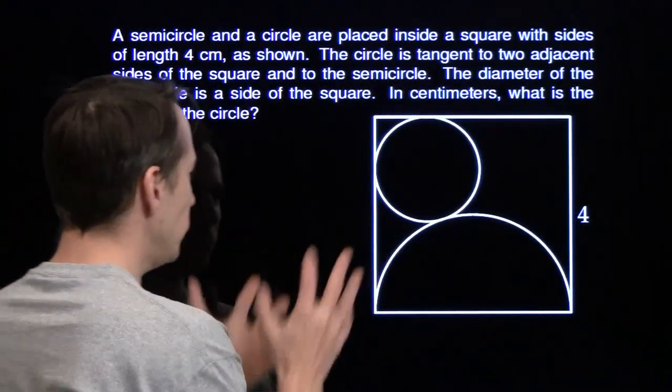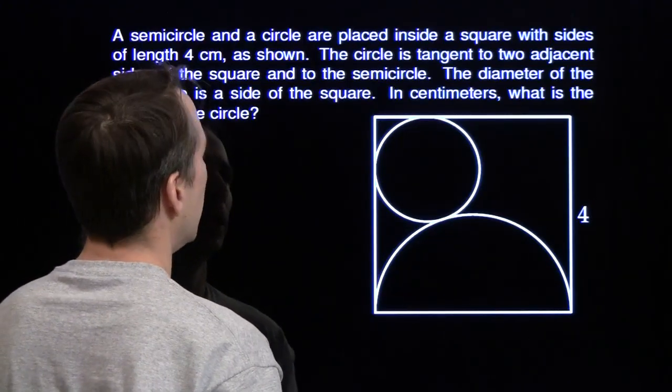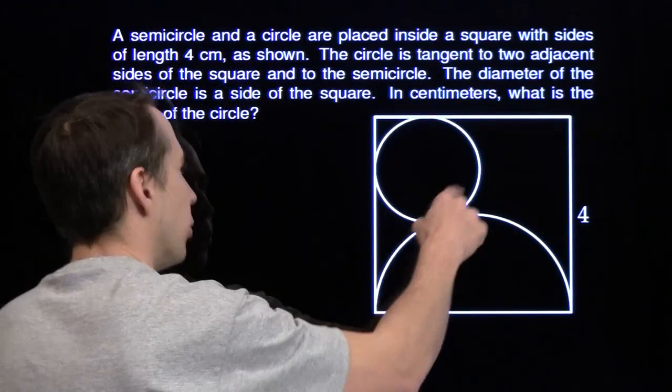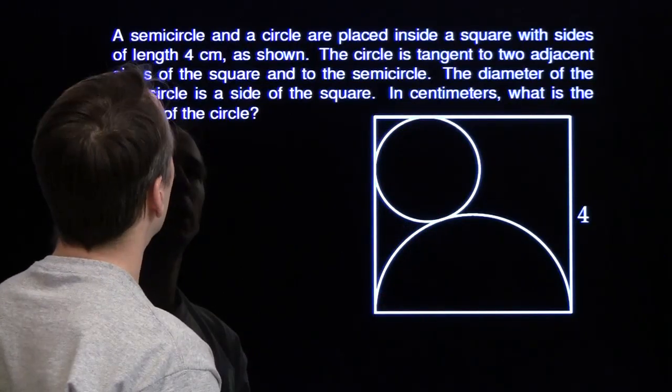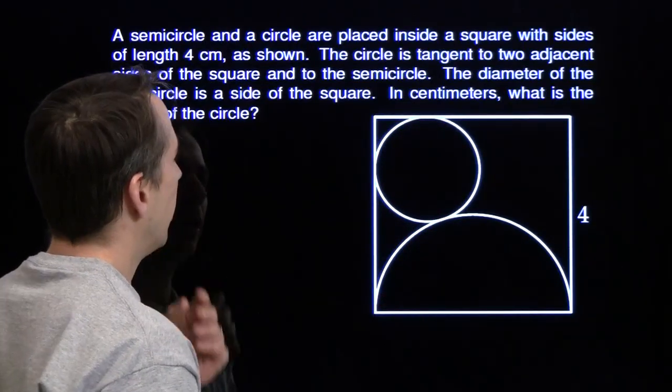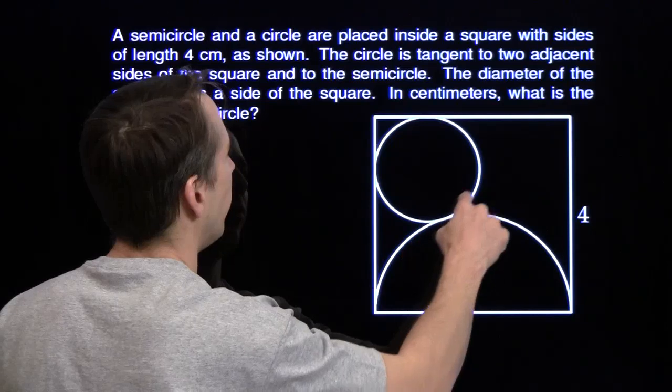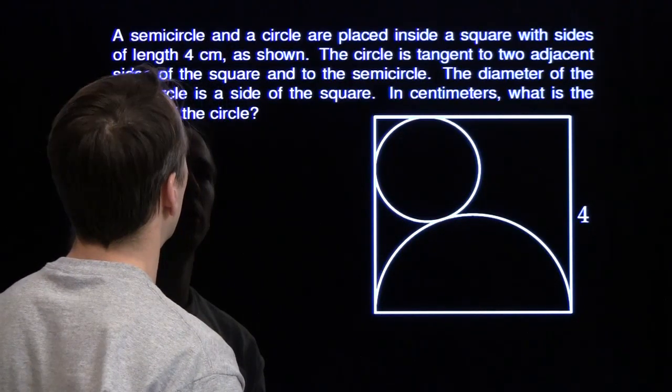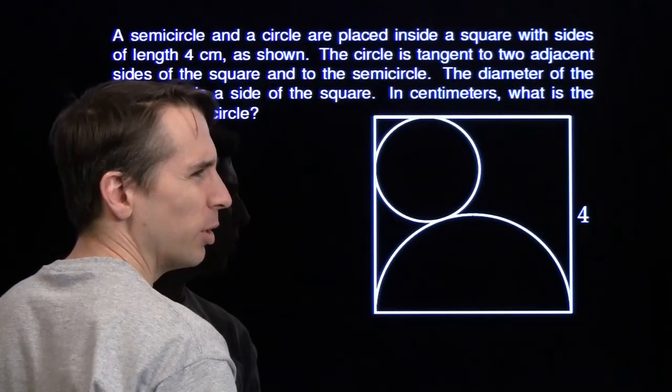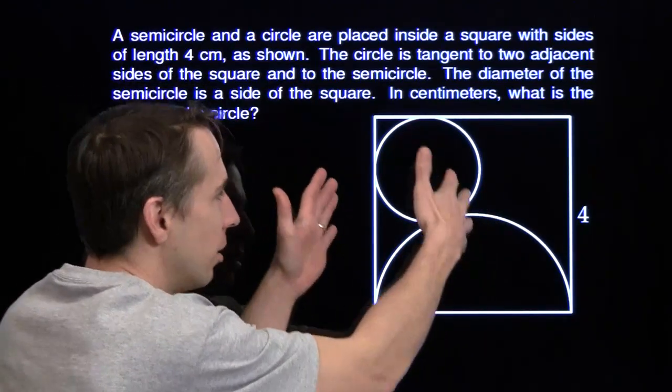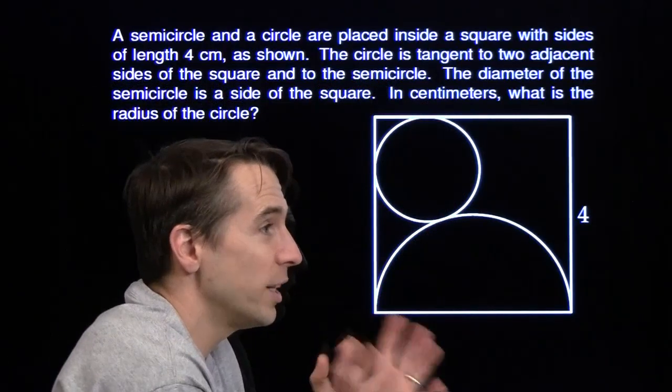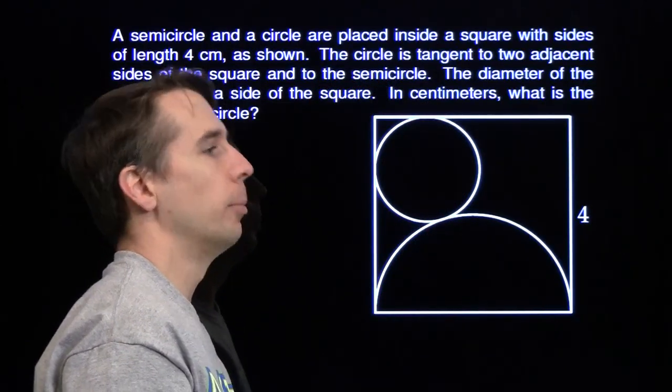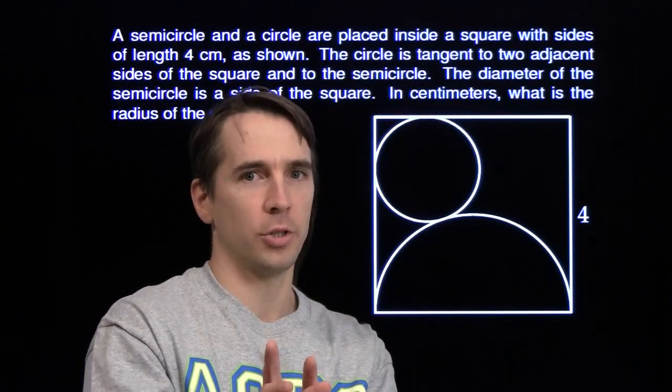But before you do that, we have one more problem. We've got a square, circle, semicircle. And our goal is to find the radius of this circle. Pythagorean theorem again. Harvey, square, semicircle, circle. There are no right triangles. Build them. We're going to try to build some right triangles. Use the Pythagorean theorem.